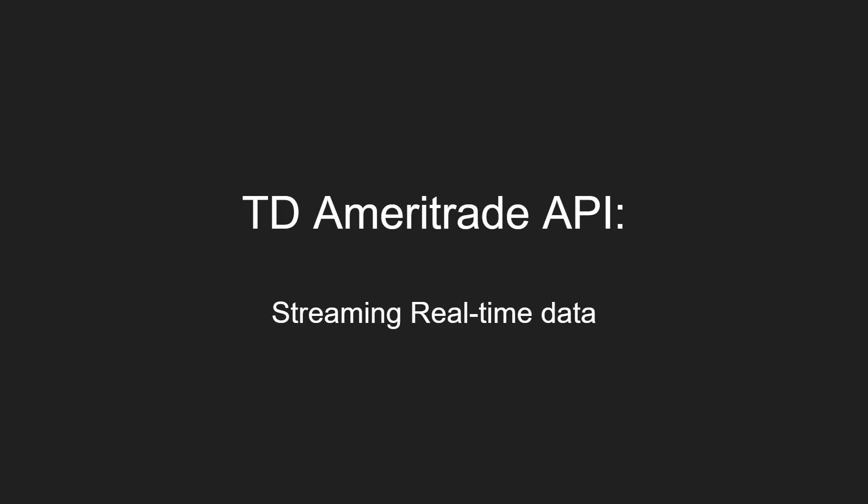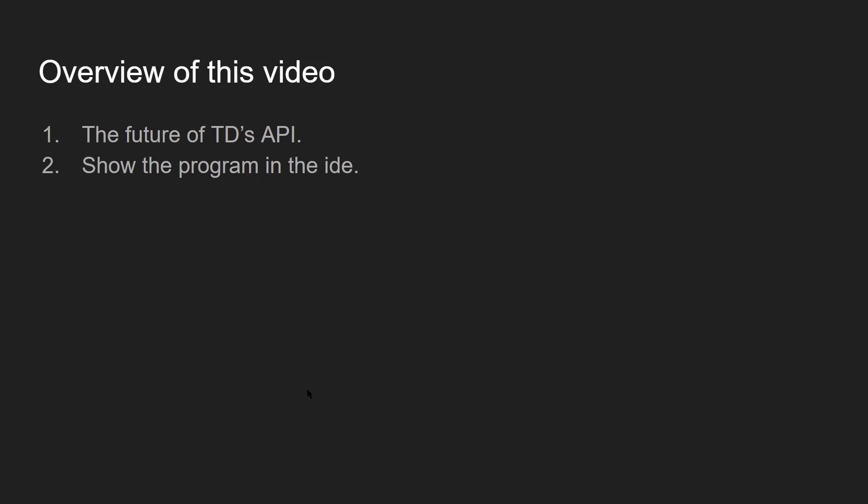In this video I'm going to be talking about the TD Ameritrade API and how we can use it to stream real-time data. First, I'm going to go over the future of TD Ameritrade's API, in response to what happened with Schwab and how their infrastructure is being moved over. Schwab bought TD a couple years ago and recently sent out an email explaining how they're moving infrastructure over to Schwab's. They'll probably keep Thinkorswim, but the API wasn't used by a considerable amount of their customer base, so they might be removing it. I've been thinking about looking into Interactive Brokers because they seem to have a pretty well-built API.